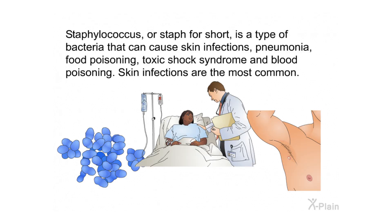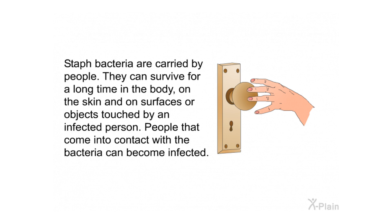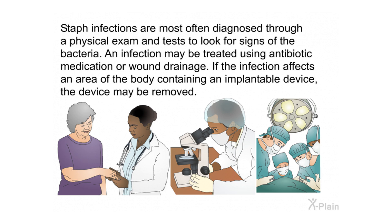Summary. Staphylococcus, or staph, is a type of bacteria that can cause skin infections, pneumonia, food poisoning, toxic shock syndrome, and blood poisoning; skin infections are the most common. Staph bacteria are carried by people and can survive for a long time in the body, on the skin, and on surfaces touched by an infected person. Staph infections are most often diagnosed through a physical exam and tests, and may be treated with antibiotic medication, wound drainage, or removal of an implantable device.